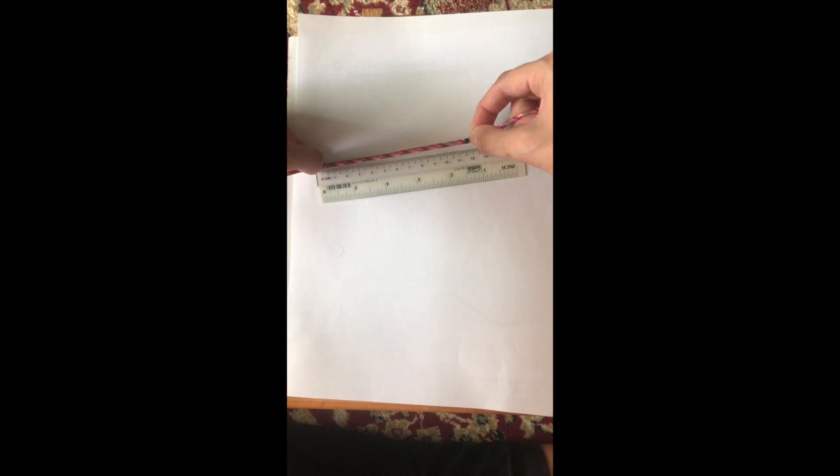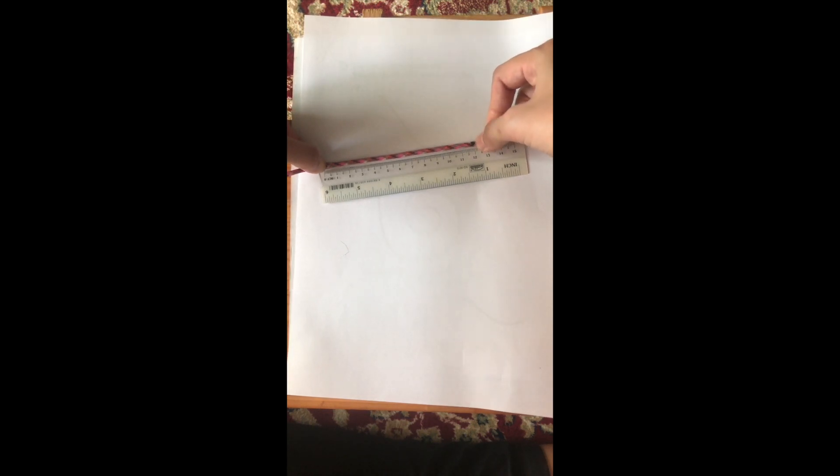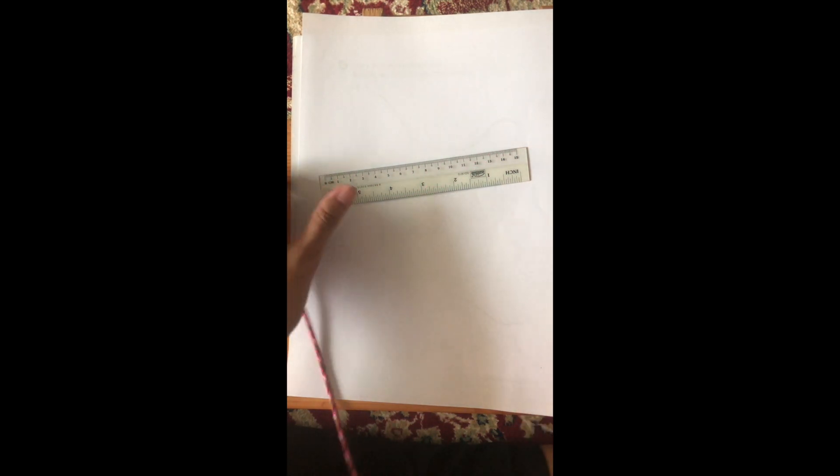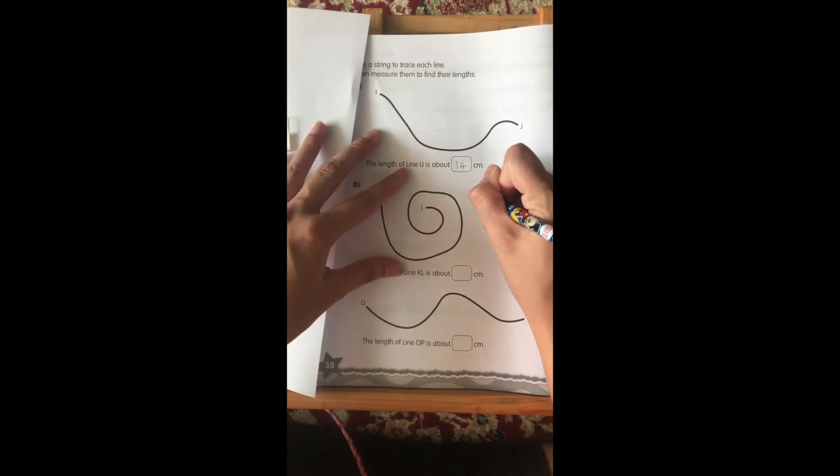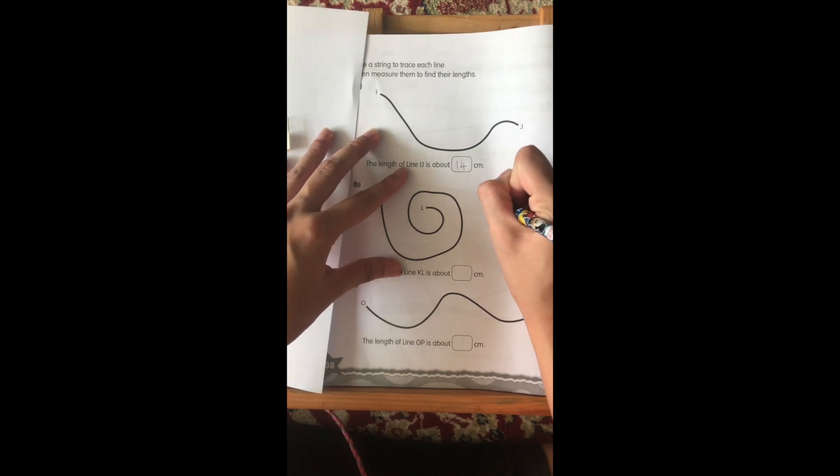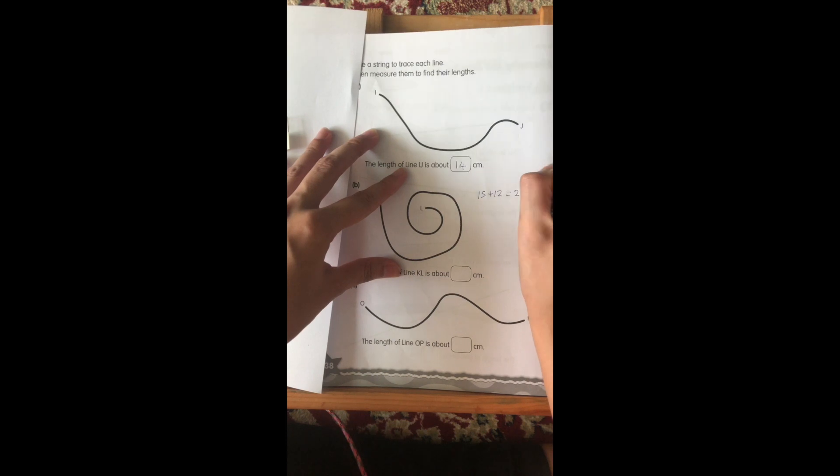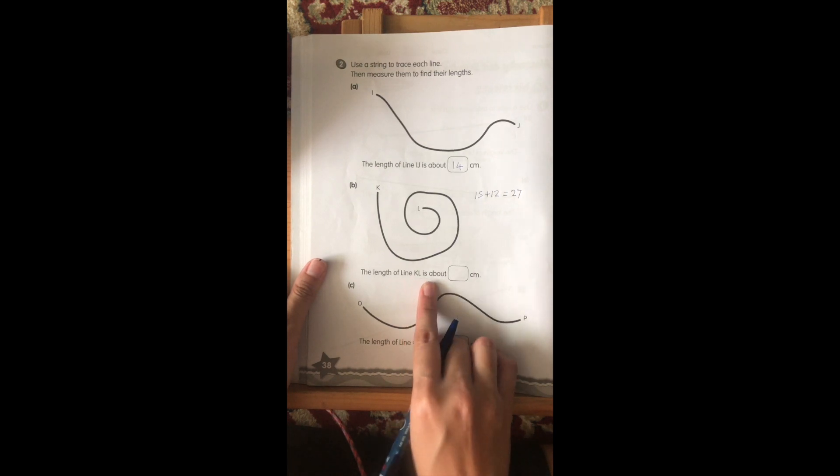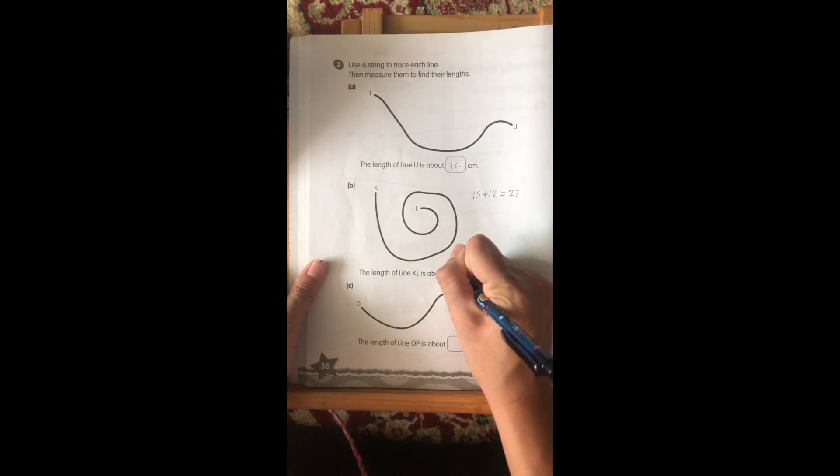And then, I bring it forward where 15 was. Put it at the 0 mark. So, 15. And now, the second mark ends at 12. So, one part is 15 cm and the other part is 12 cm. It means we need to add them together to find the total length. So, it will be 15 and 12, which gives you 27. Wow! Therefore, the length of line KL is about 27 cm.